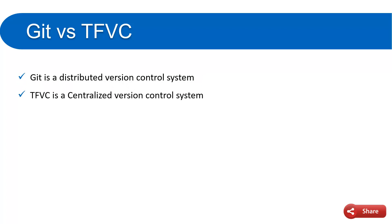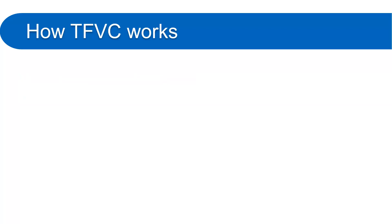Git is a distributed version control system and TFVC is a centralized version control system. You might be confused about what these terms mean — do not worry, in the next slide we will clear this confusion and understand the exact meaning of distributed and centralized version control. But first, let's understand how TFVC works.